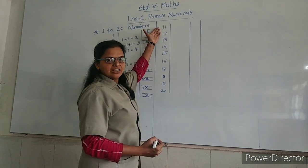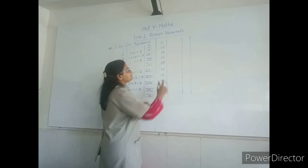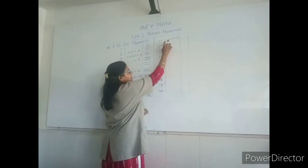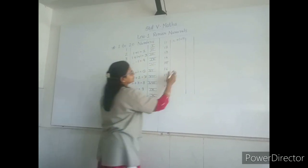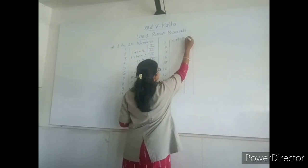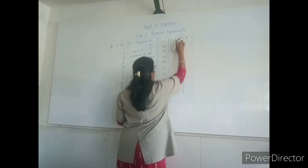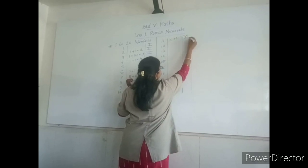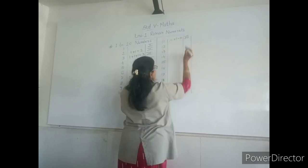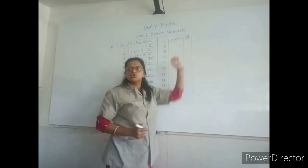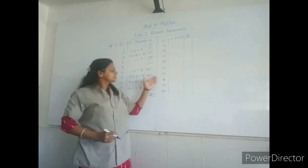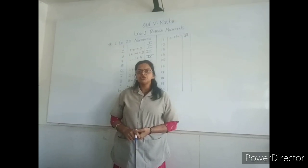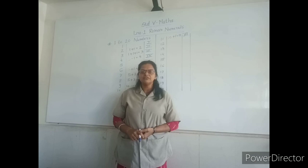Now, 11: 10 plus 1 is equal to 11. 10 is X, 1 is I. So, 11 is XI. Students, write these numbers in Roman numerals in your notebook. In the next video, we will solve problem set 1. Thank you.